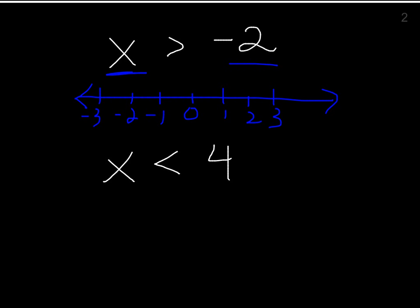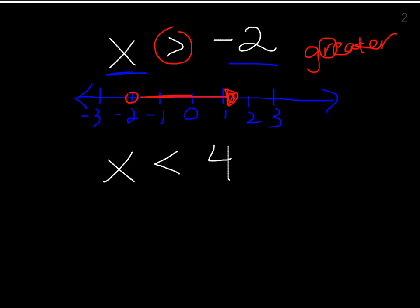If it's just greater than or less than — like both examples on this page — it's open, because it doesn't include that number. So put an open circle on negative 2 to show everything greater than negative 2 but not negative 2 itself, so we leave it open. Since it's greater than, all the bigger numbers go to the right. Remember: 'greater' has an R, so go right.